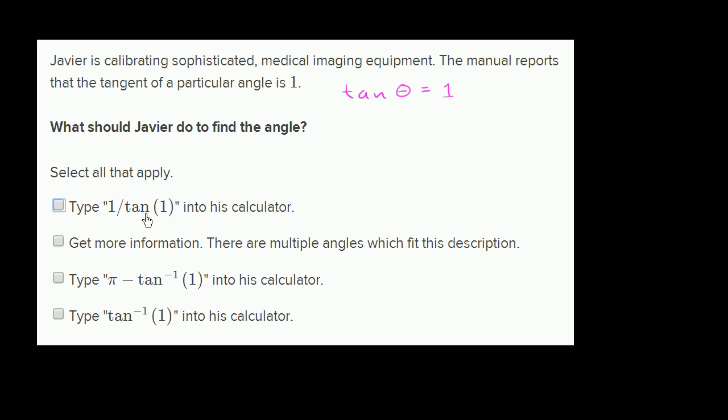So let's look through each of them. So the first one, well actually instead of looking at the choices, let's think about what we would do to find the angle. They're saying that the tangent of some angle is equal to 1.